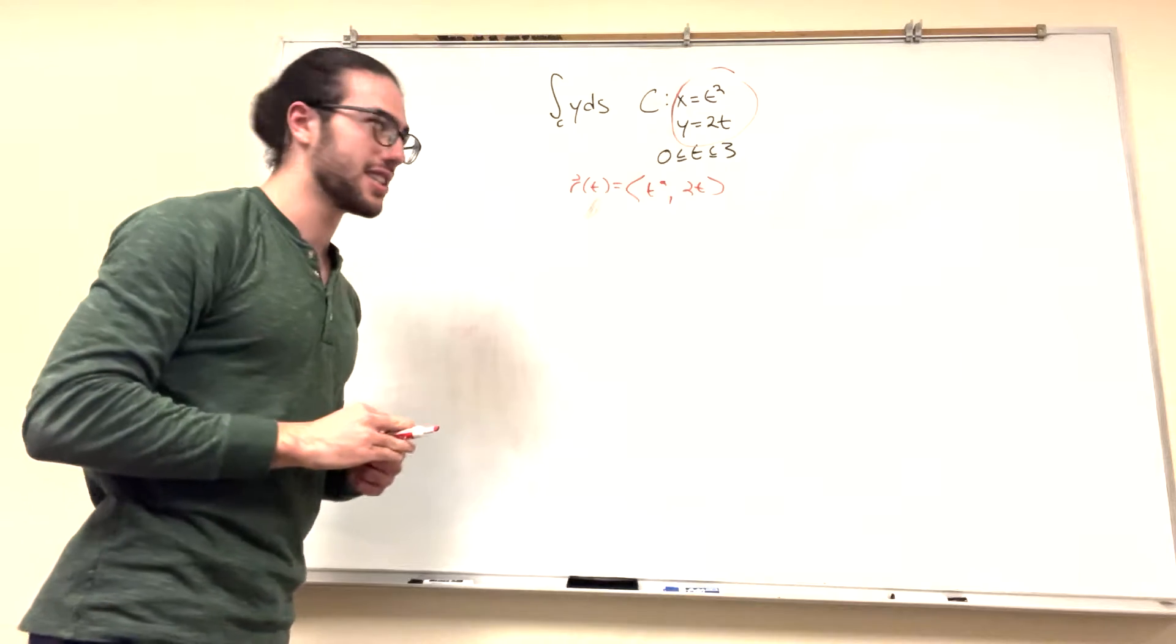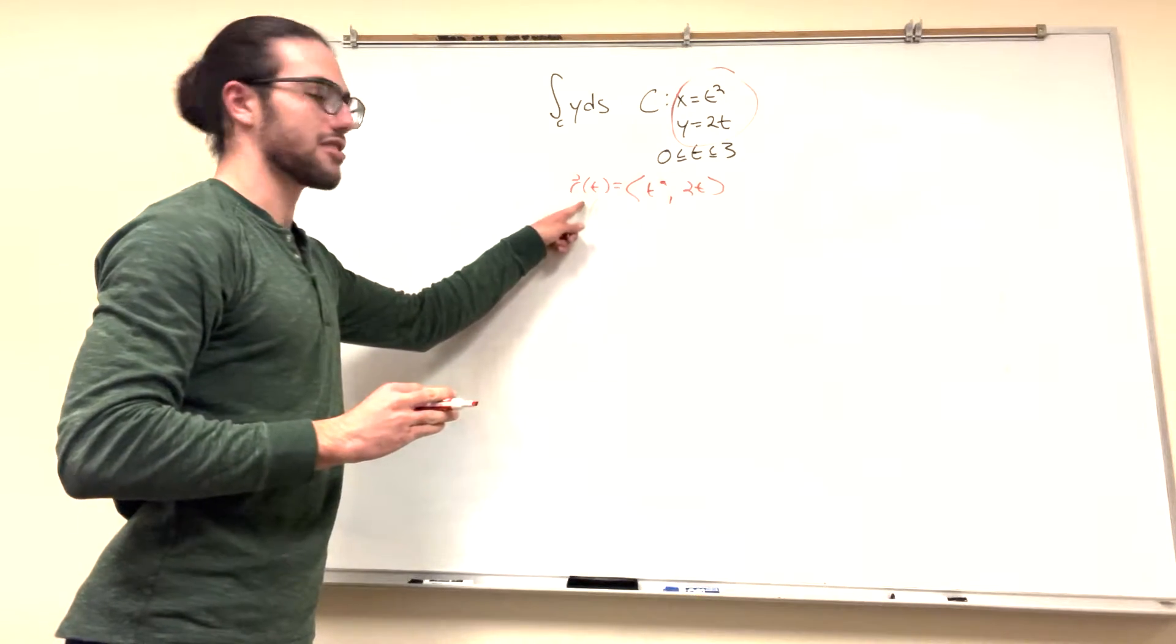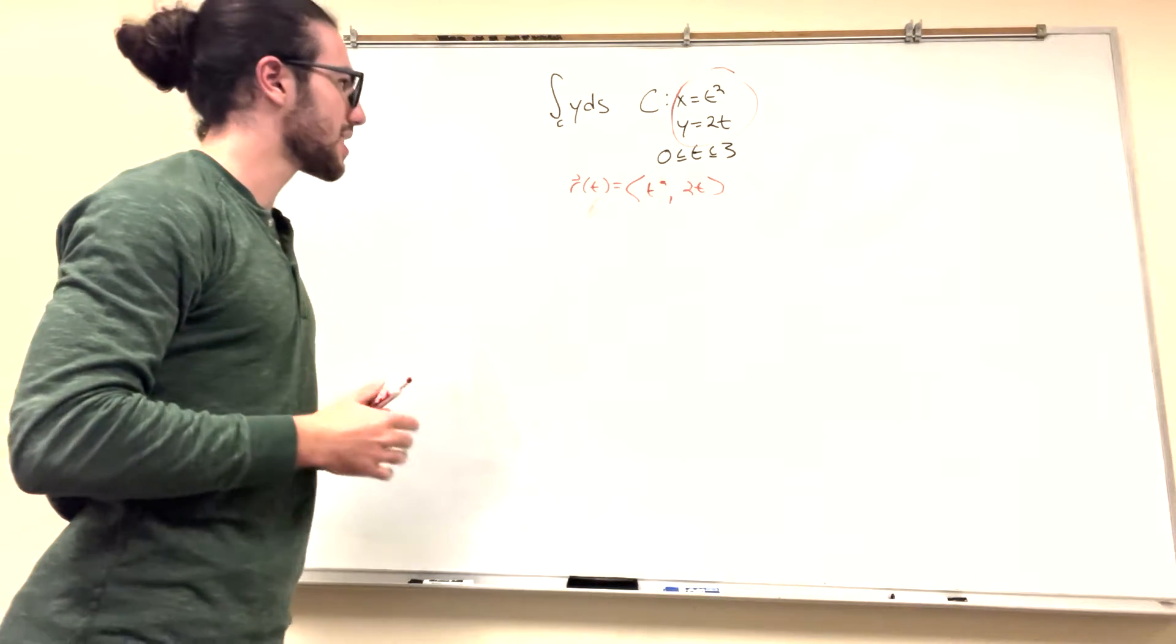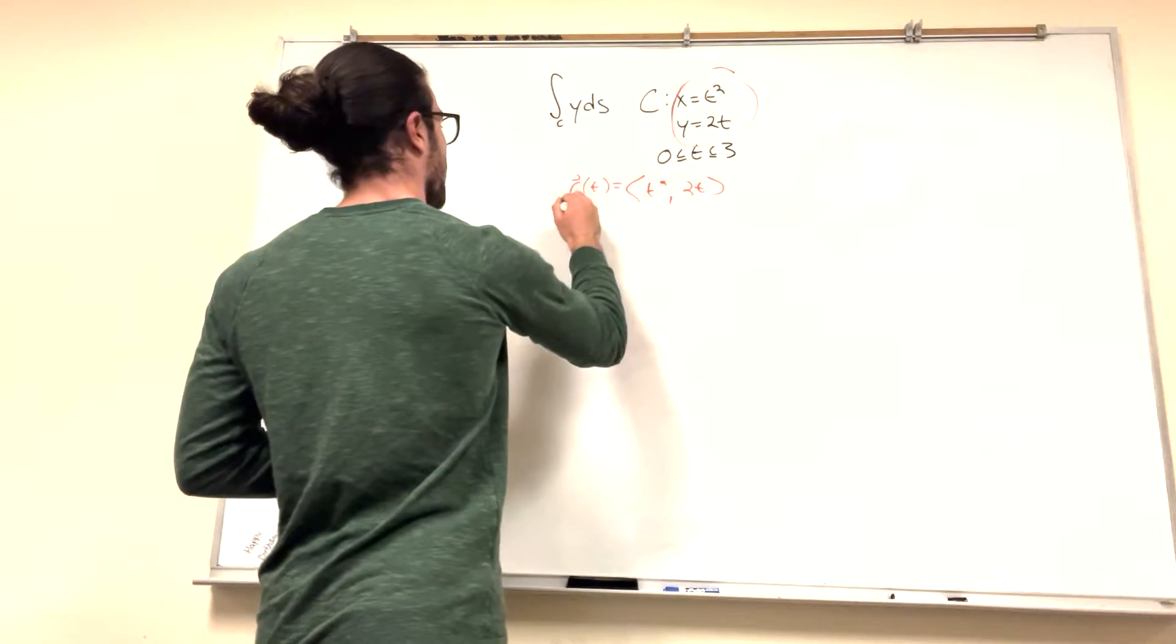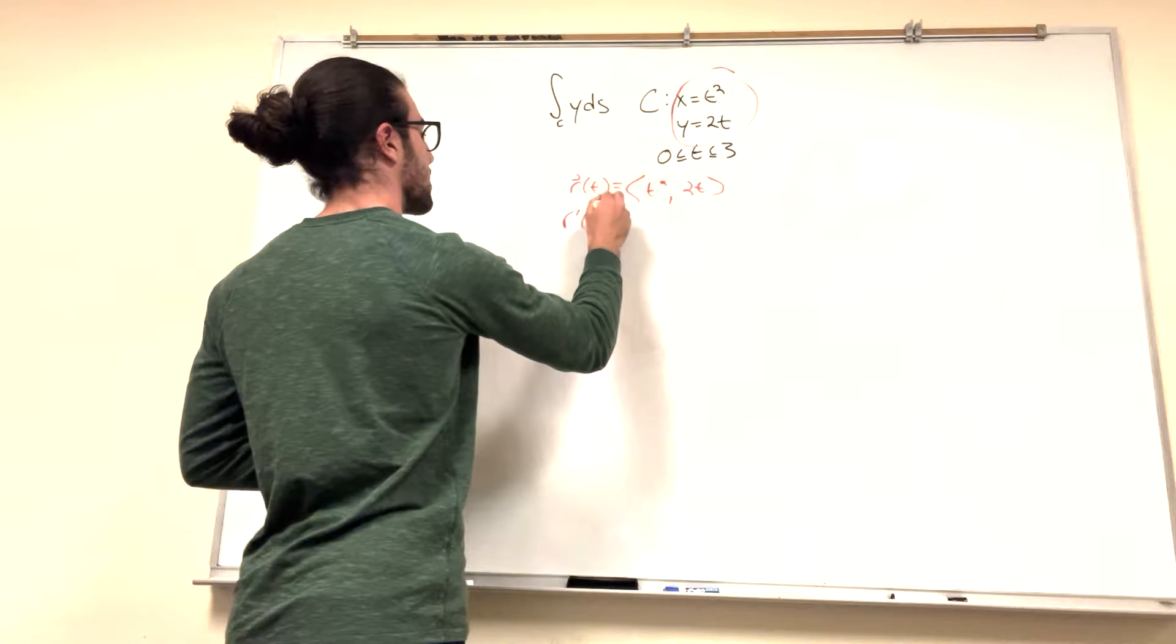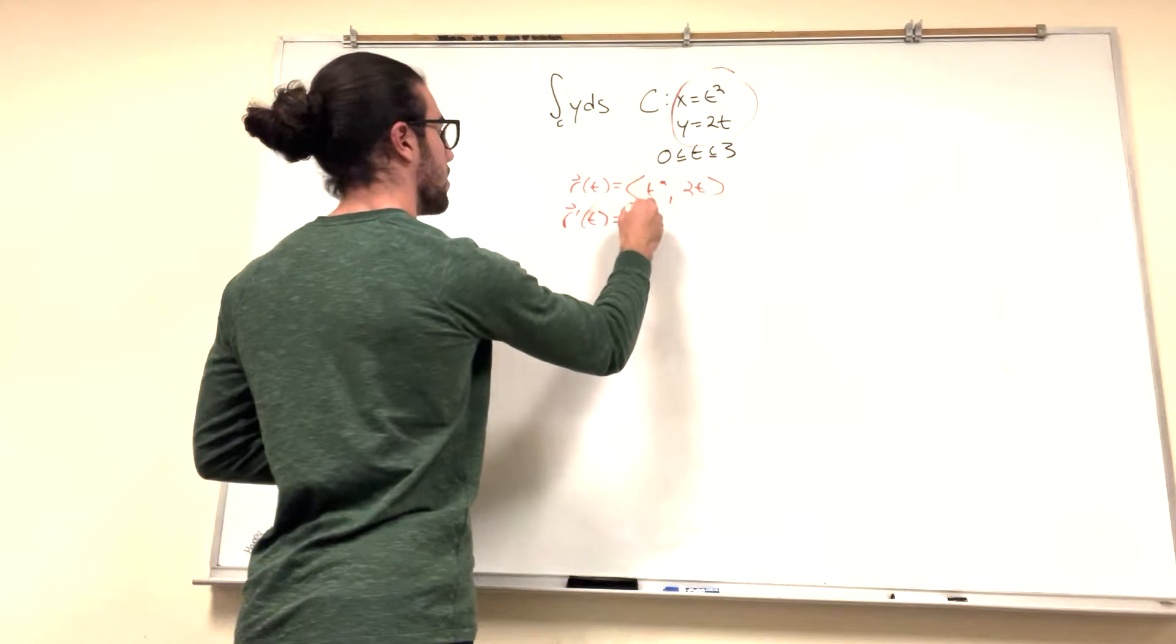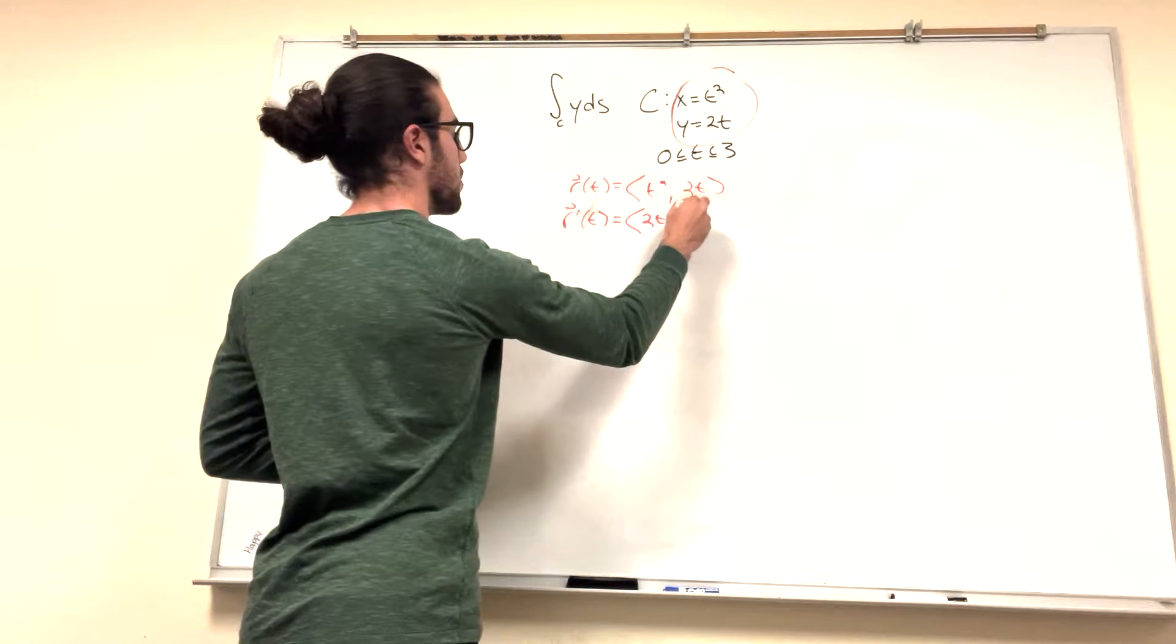We know that what we're looking for is the magnitude of the derivative of this vector. So if we can find that then we use it with our formula. So the derivative of this is equal to 2t, 2. Pretty cool right?